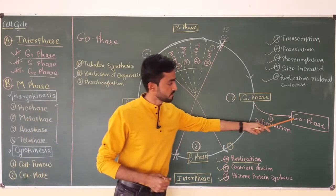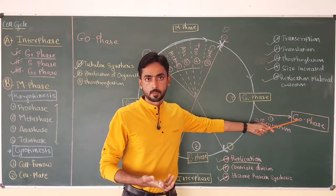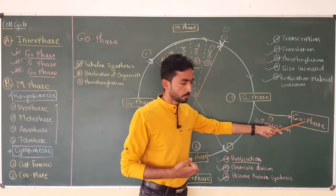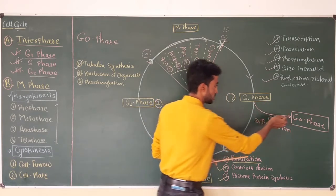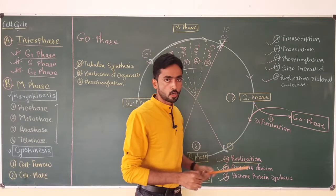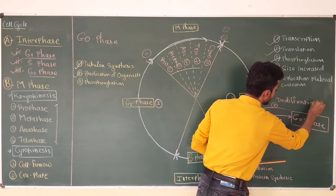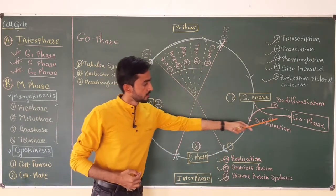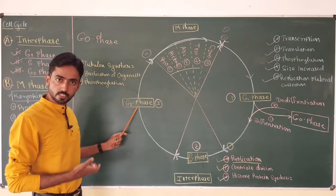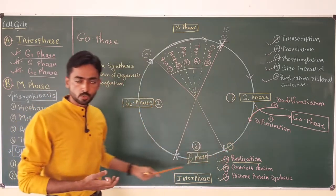Sometimes in G0, the cell or the organism's body requires that cell to multiply again. In that case, the cell should re-enter G1 from G0. This metabolically active but stable cell again enters the main cell cycle, and this process is called de-differentiation. After re-entry into the cell cycle, the cell performs normal multiplication: it enters S phase, then G2 phase, and after entry into M phase, the cell divides.